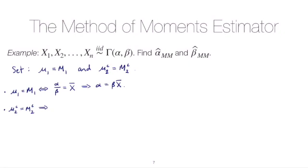So we would set the variance population variance alpha over beta squared equal to the second centralized moment. So 1 over n times the sum of the xi's minus x bar squared.